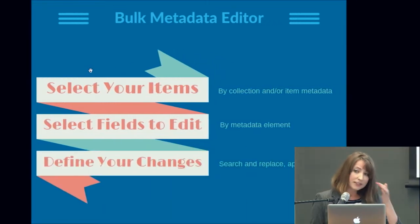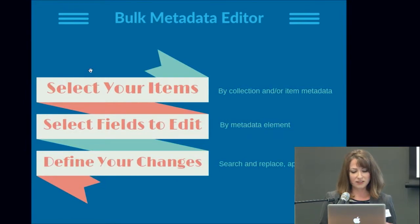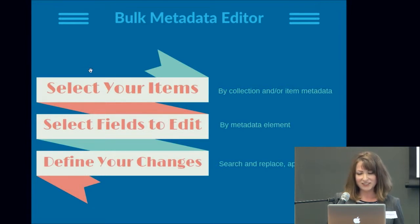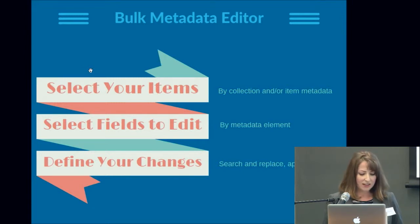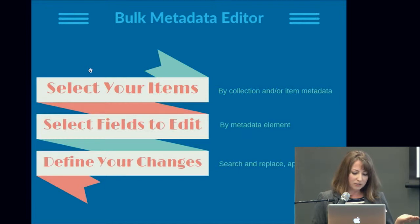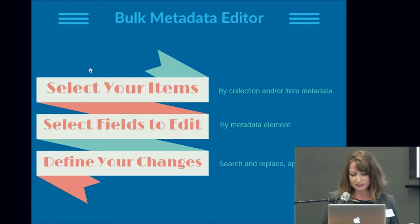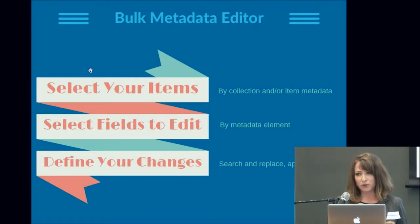The ability to make bulk changes to Omeka object metadata was highly desired by both our curators and catalogers. In a system like GDAO with over 45,000 objects, it's very labor-intensive to edit metadata across a collection. For instance, if you want to change a rights statement for a given artist, that might be 500 objects. The bulk metadata editor plugin allows administrators to quickly change object metadata using search and replace, add new metadata, or delete existing metadata across multiple items. This plugin is currently available for download on the main Omeka site.